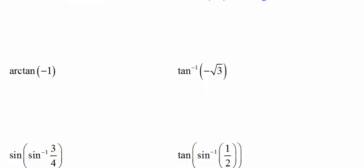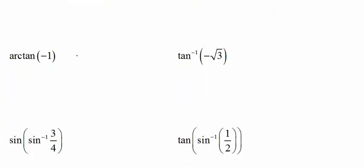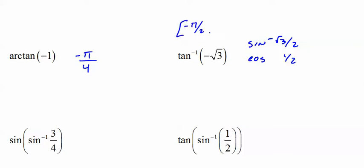Where does tangent equal negative 1? Negative pi over 4. Where does tangent equal negative root 3? This one's a little tricky. We need sine to be root 3 over 2 and cosine to be one-half, with one of them negative, so we go into the fourth quadrant — that's where tangent is negative within negative pi over 2 to pi over 2. The answer is negative pi over 3.